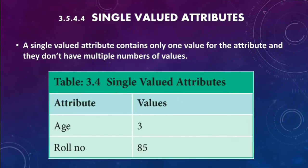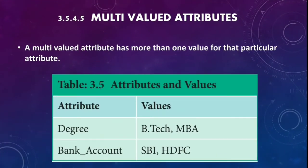The fourth type is single valued attribute, which contains only one value. For example, Roll Number — every student has only one roll number. Similarly Age and other identification numbers have only one value per record; these are single valued attributes. The fifth type is multi-valued attribute, which has more than one value — for example, phone number, bank account, or degree. A person can have many phone numbers, many bank accounts, or many degrees.